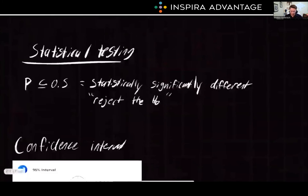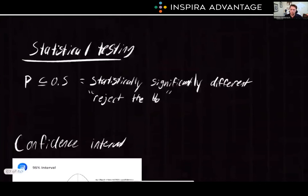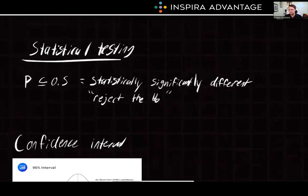Now let's dive into a quick statistical testing overview. Let's say you're investigating a new drug and have two groups — one that received the drug and one that didn't, which is very common in an MCAT passage. You calculate a p-value to test your null hypothesis: the claim that the drug has no effect. If the p-value is less than your significance level — usually 0.05 for the MCAT — you'd reject the null hypothesis, providing evidence that your drug works.